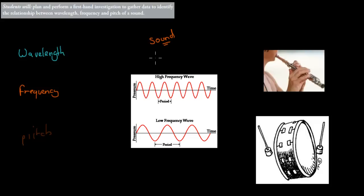Remember wavelength was just the distance between two peaks. So if we have different types of waves here, this would be a peak and this would be a peak, so the distance between these peaks is a wavelength — so this would be one wavelength.